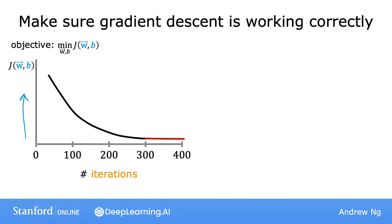Notice that the horizontal axis is the number of iterations of gradient descent and not a parameter like w or b. This differs from previous graphs you've seen, where the vertical axis was cost J and the horizontal axis was a single parameter like w or b. This curve is also called a learning curve.